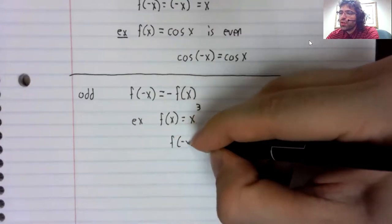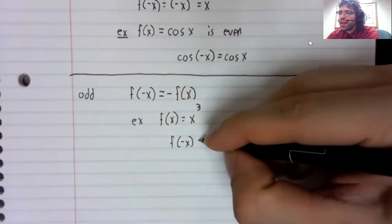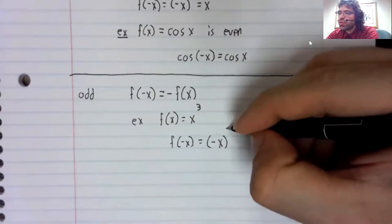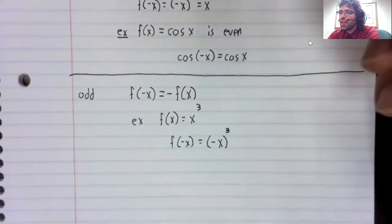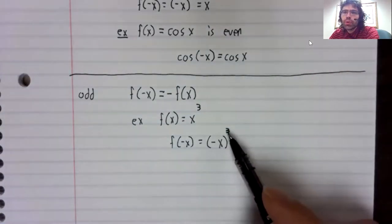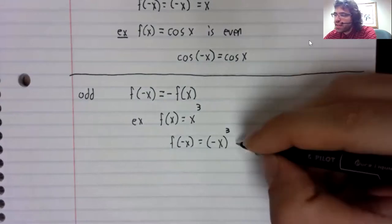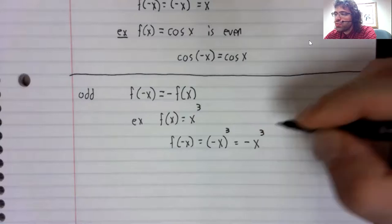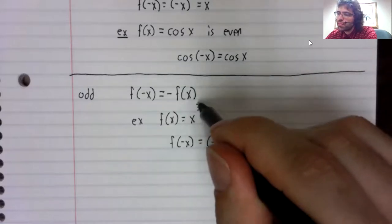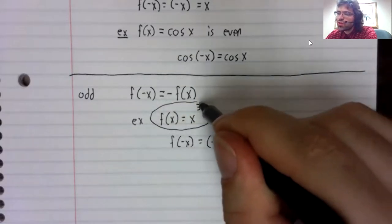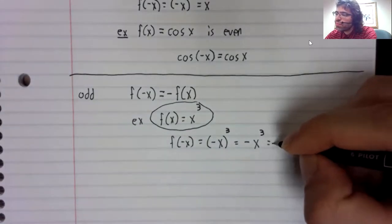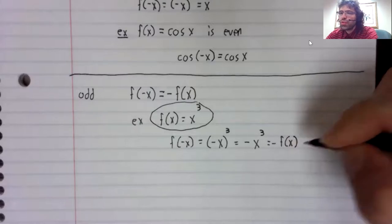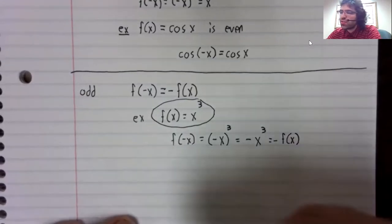If you look at f(-x), that's negative x cubed. The negative sign cubed will still be negative. And that's negative x cubed. X cubed is f(x). So this is negative f(x).